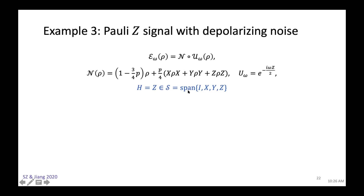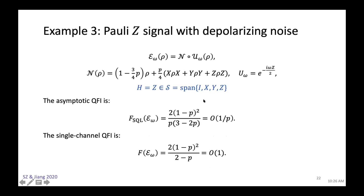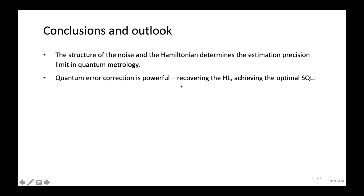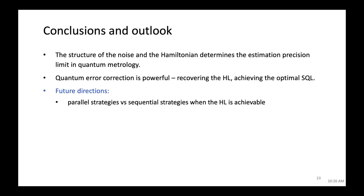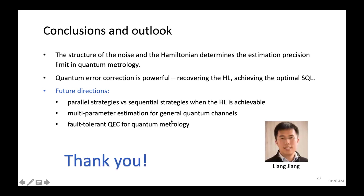For the depolarizing channel, the situation is similar to the dephasing case—it is also SQL—but here we do need error correction because the optimal initial state is not obvious. To wrap up: the structure of the noise and the Hamiltonian determines the estimation precision limit, and QEC can be used to achieve this limit. Future directions include comparing parallel versus sequential strategies when HL is achievable, multi-parameter estimation, and the Bayesian case.